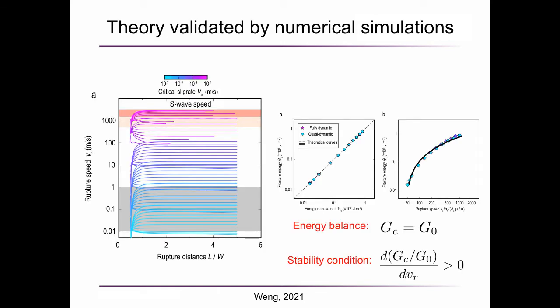I find indeed the steady state rupture can be produced in the numerical simulations. As the left figure shows, the steady rupture speed spans a wide range from very slow speeds up to the shear wave speed. On the right figure, it shows the two theoretical conditions are satisfied in all these numerical models.